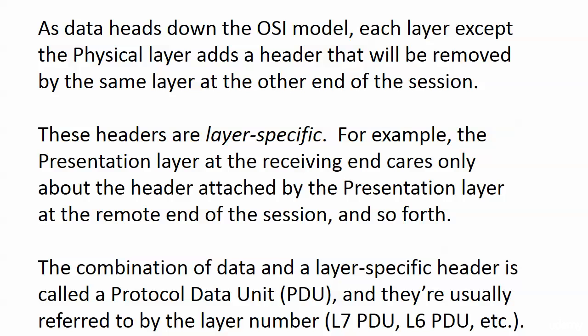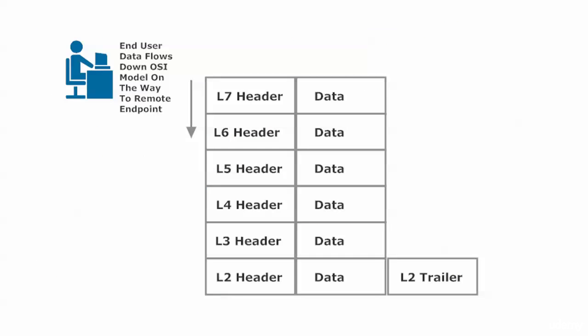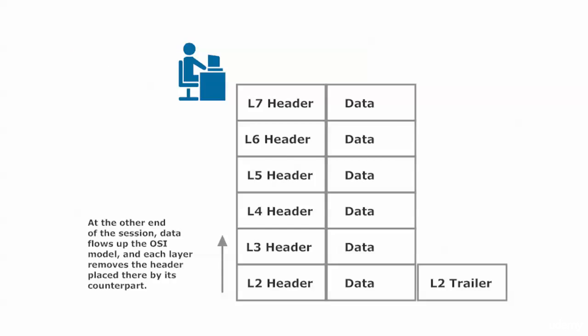As data flows down the OSI model, every layer except the physical layer adds a little bit of overhead. Each layer adds a header that will be removed by the same layer at the other end of the session. These headers are layer-specific — the presentation layer at the receiving end only cares about the header put on by the presentation layer at the remote end. This combination of data and a layer-specific header is called a Protocol Data Unit, or PDU, usually referred to by layer number: L7 PDU, L6 PDU, etc. Note that at layer two, the data link layer, we're also adding a trailer — that is the only layer with a trailer.